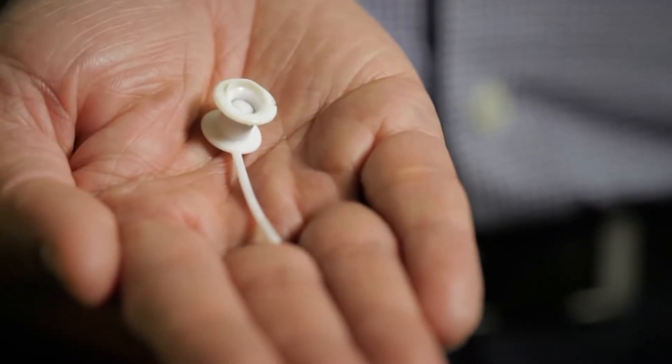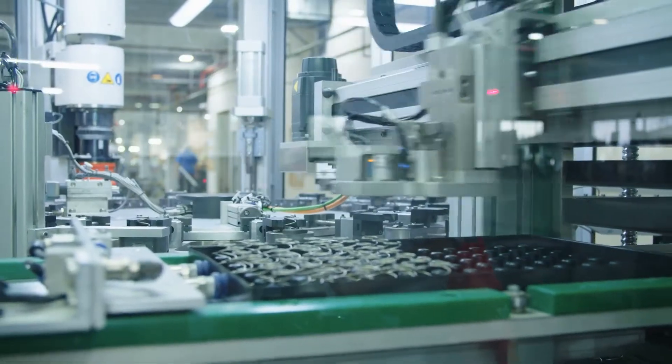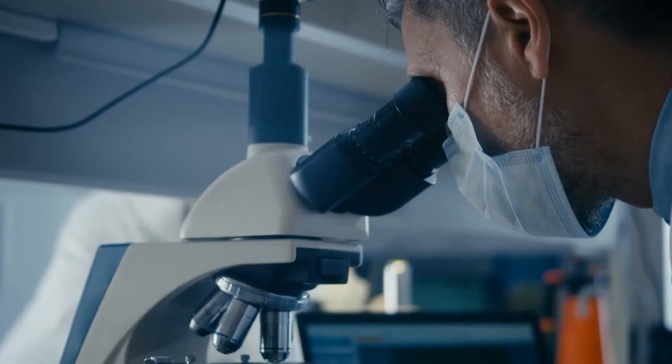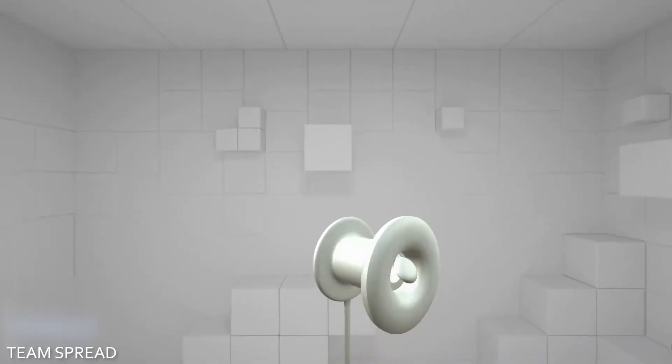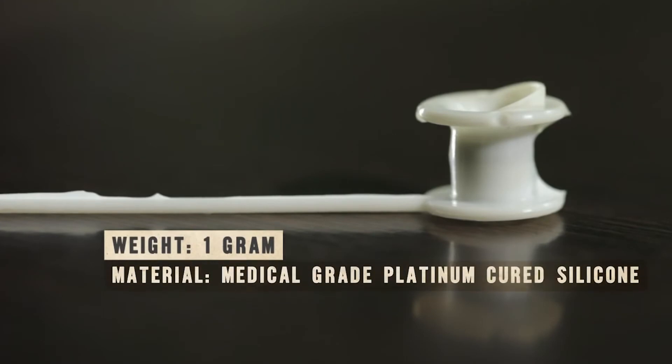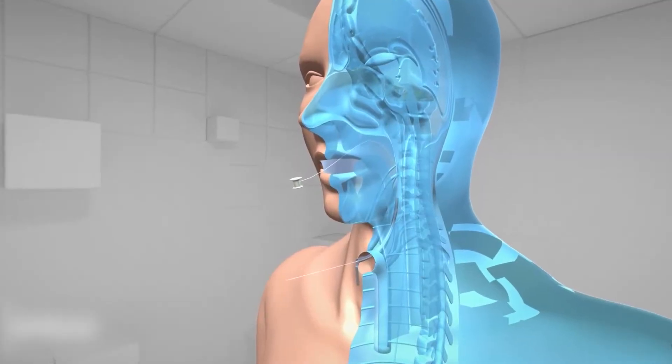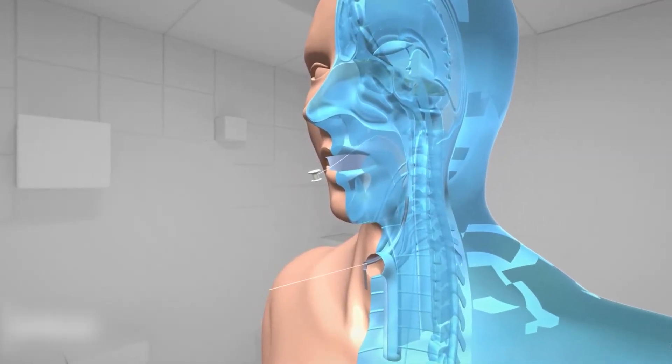The Oom Prosthetic managed to get so cheap thanks to the manufacturers, suppliers, and scientists who volunteered their time to the project. The finished prosthetic only costs about 75 cents. It weighs only a gram and is made from medical-grade, platinum-cured silicone. In addition to its groundbreaking affordability, Oom only takes about 15 minutes to surgically implant.